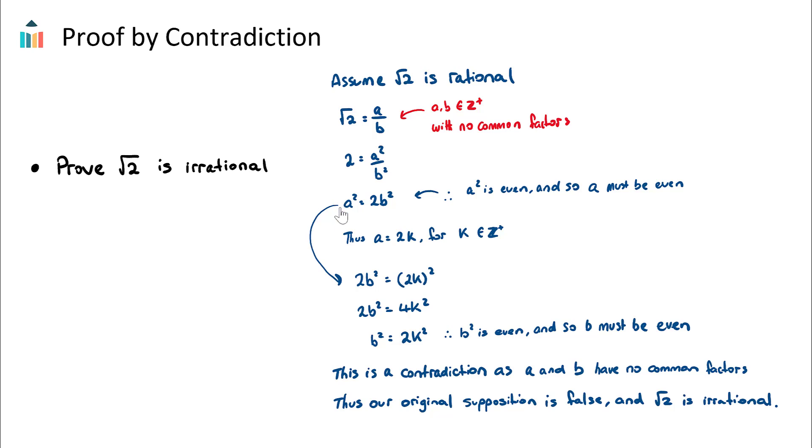Now at this step here we can say well if a² = 2b², then clearly a² is even because 2 times anything will give us an even number.